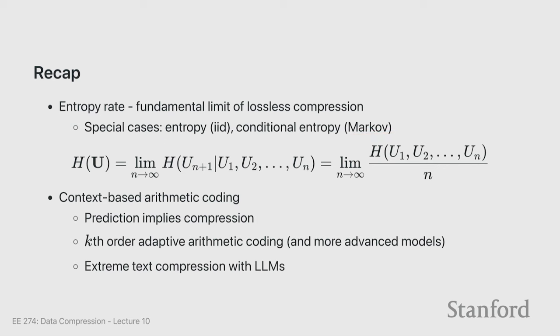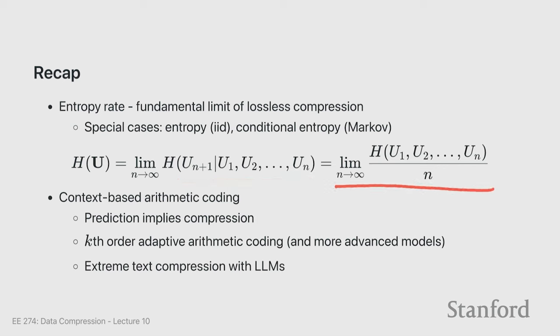We defined the entropy rate in two ways: one as the incremental conditional probability in the limit as n goes to infinity, and the other as the average entropy per block as n becomes larger. In the last lecture we looked at context-based arithmetic coding, where we learned the important concept that prediction implies compression — if you have a good predictor, that's a good compressor.